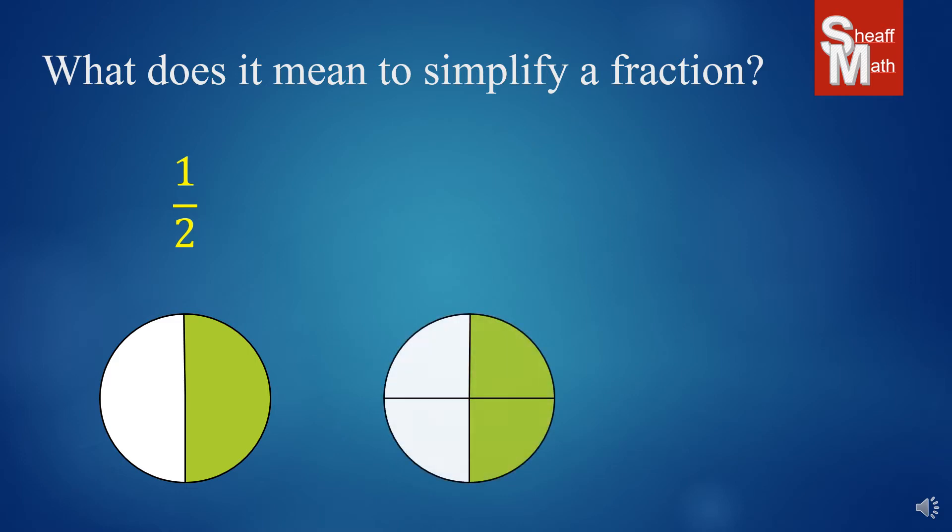Well, let's suppose I took that same shape, and I divide it into four equal parts. Now, I have four parts, and two of them are shaded. Has the shading changed at all? No, it's still half of it is shaded, but we write it in a different way. One-half and two-fourths are equivalent.